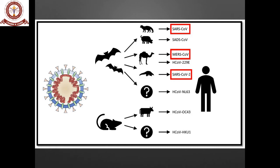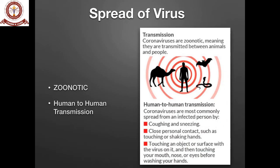Coronavirus originates from the bat and the rat, which carry a high viral load. Through an intermediate host — which can be a pig, camel, anteater, or cow — it is transmitted to humans. This is called zoonotic spread: from animals to humans. From one infected human, it can then transmit to another human.